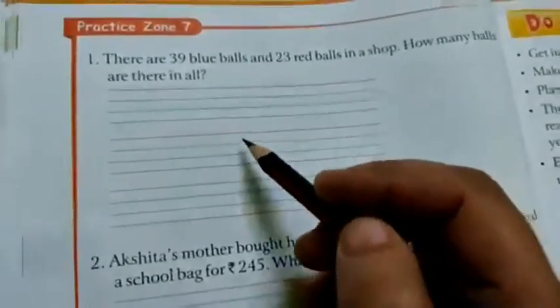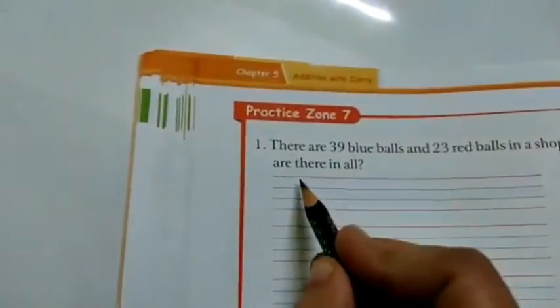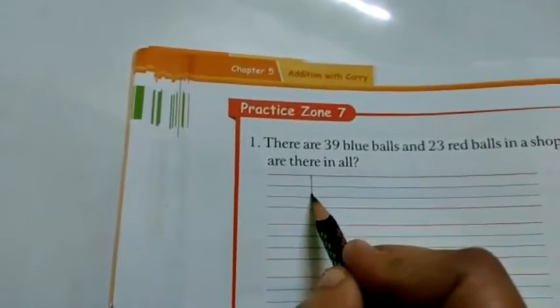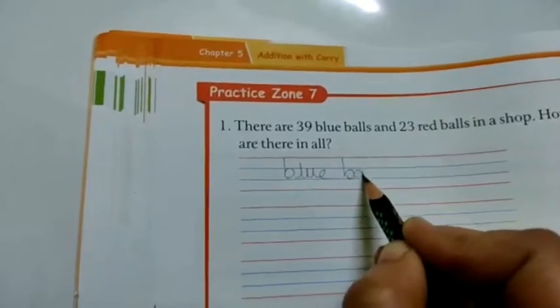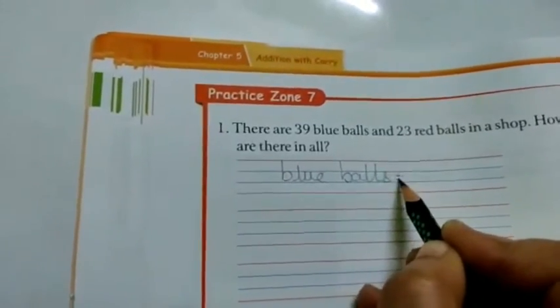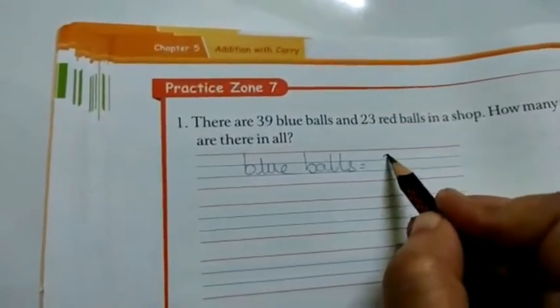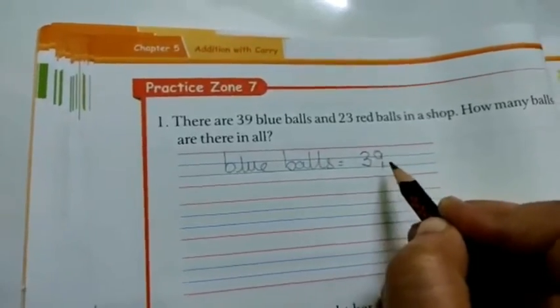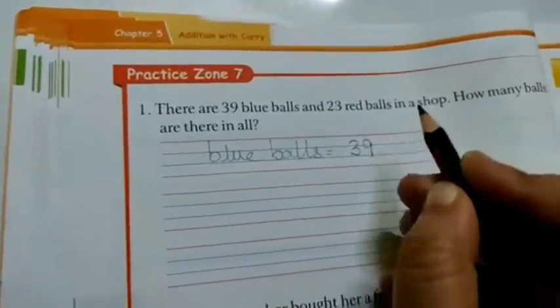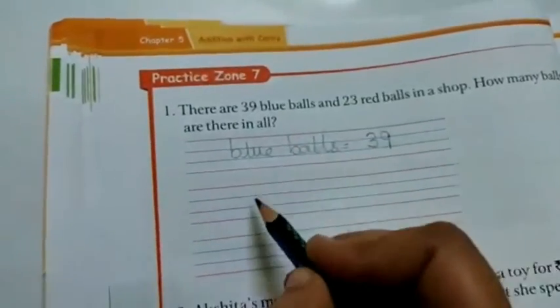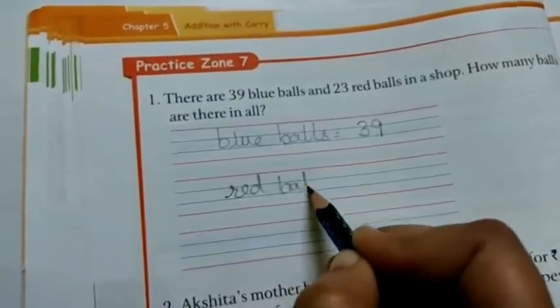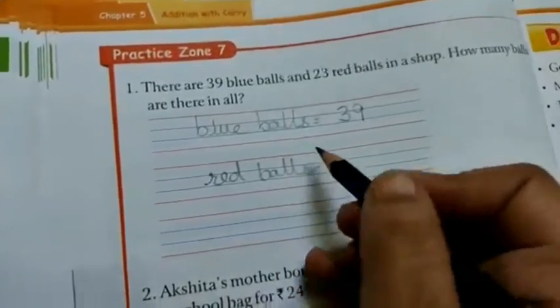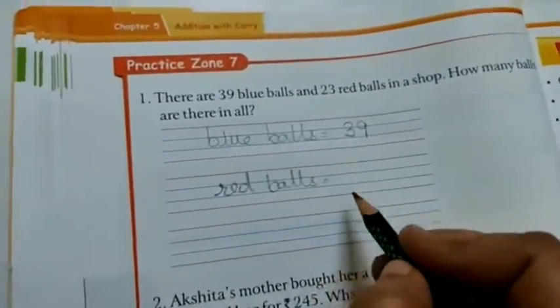So what are you going to write as the statement? Blue balls is equal to how many blue balls are there? 39. Red balls, 23.